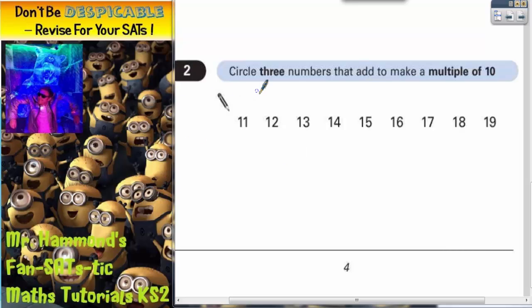Question number two: circle three numbers that add to make a multiple of ten. Multiples of ten are the ten times table, so ten, twenty, thirty, forty, fifty, sixty and so on.